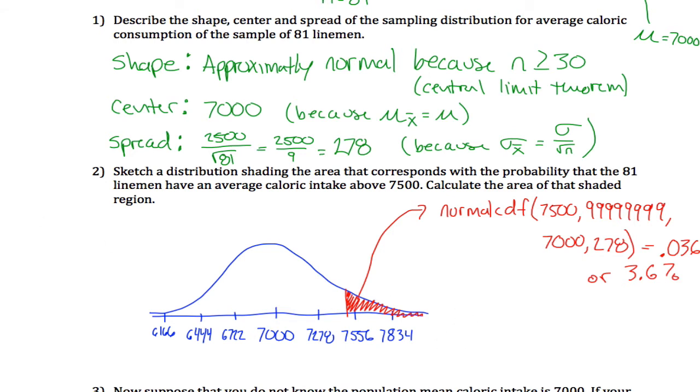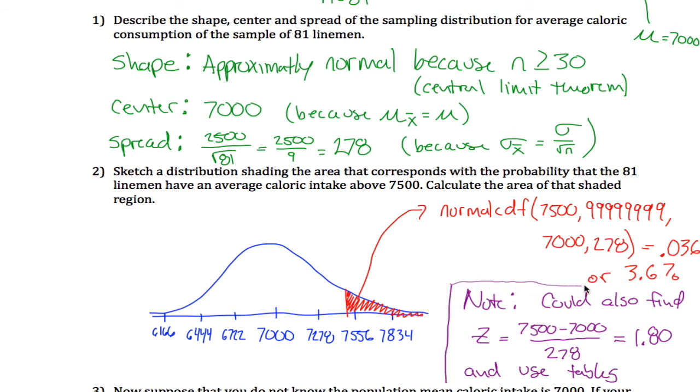As a note, you could also find the z-score, which would be 7,500 minus 7,000 over our standard deviation of 278, which is a little less than 2, about 1.80. And use the tables. If you use the tables, you'll find the area below and then do 1 minus that to find the area above. But at this point, you guys are pretty good with tables, so I'll just leave it at that.